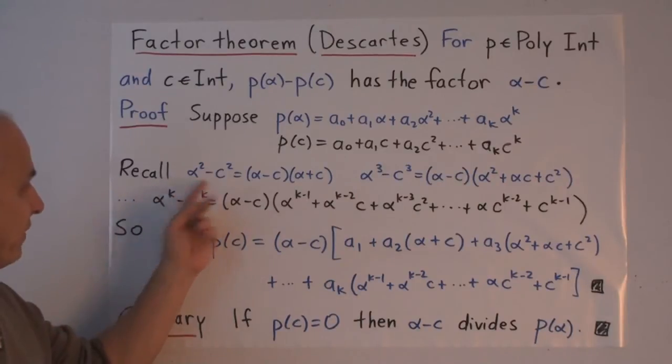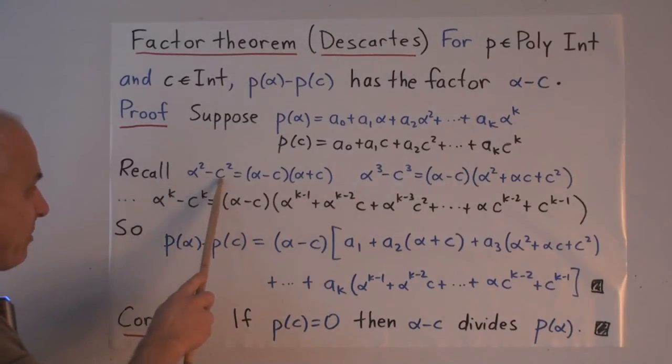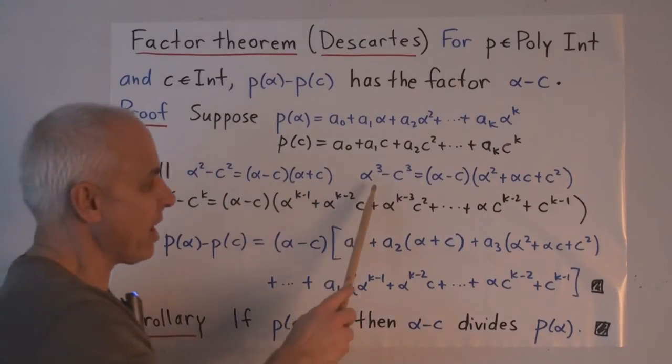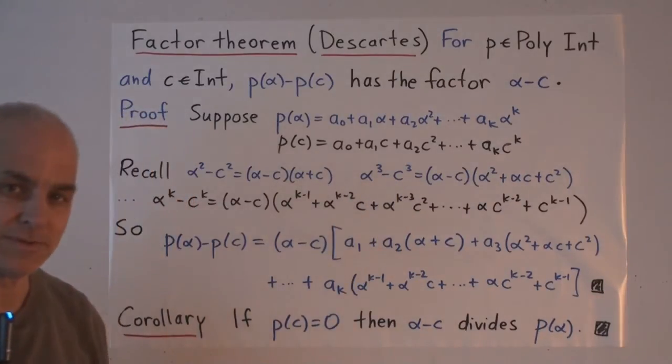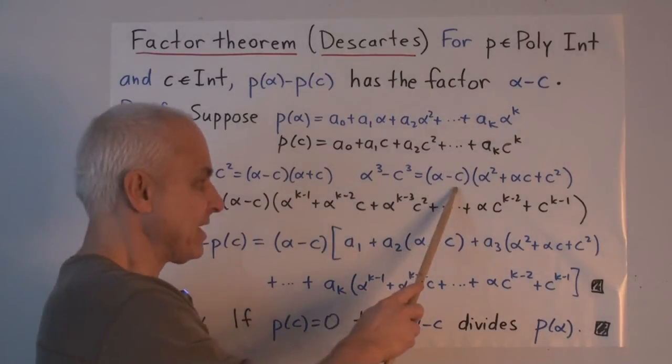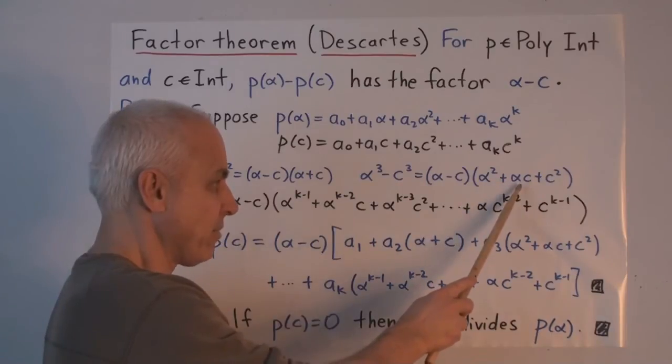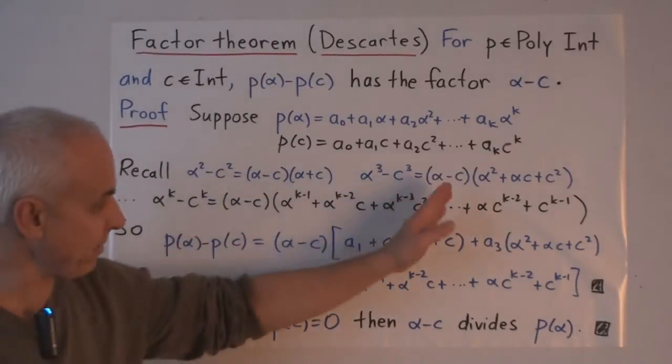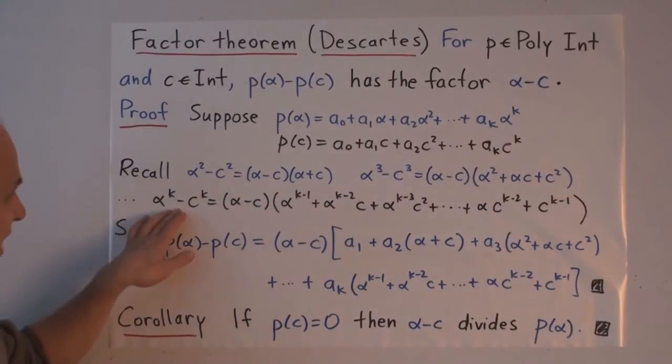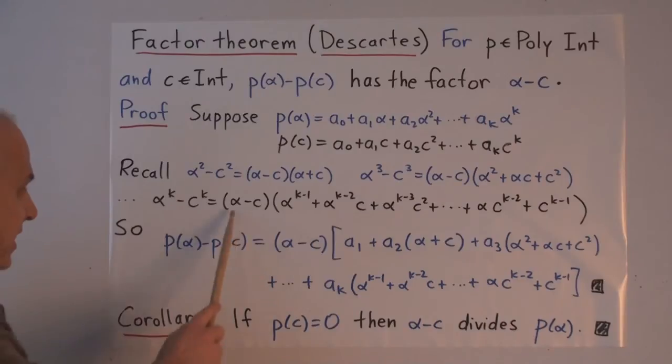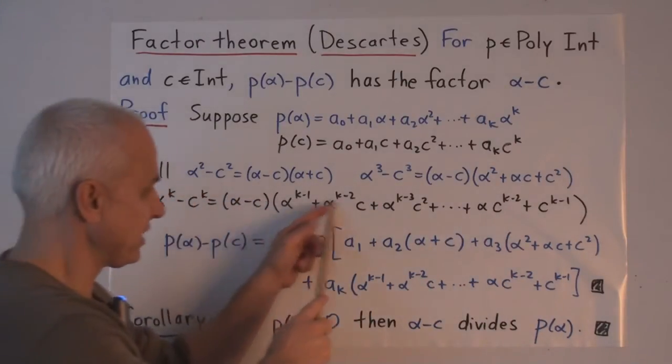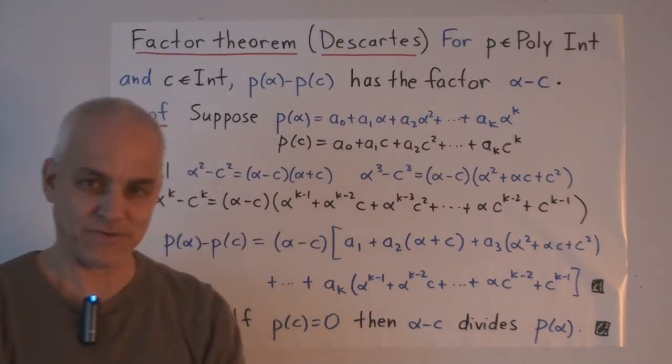Now I have to remind you of some identities that we've seen in a number of different times. The simplest one is the difference of squares. Alpha squared minus C squared equals alpha minus C times alpha plus C. Slightly going up, alpha cubed minus C cubed is alpha minus C times alpha squared plus alpha C plus C squared. And there's a whole family of such. The kth one being alpha to the K minus C to the K is alpha minus C times this expression. So decreasing powers of alpha increasing powers of C.